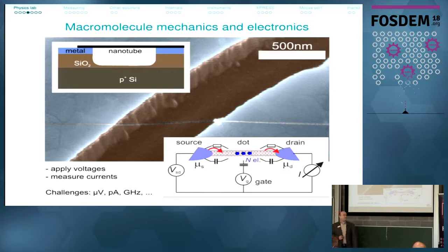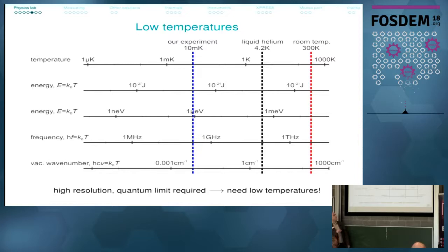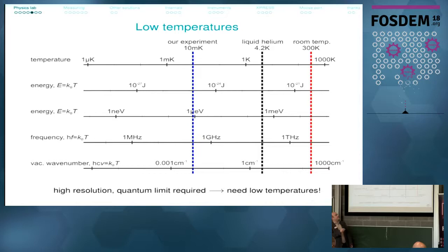The challenges are measuring very small voltages, very small currents, possibly at high frequencies, and seeing tiny details — which is why we go to low temperature. Temperature is for us something like noise: the higher the temperature, the more smeared out the effects we want to observe are. On this logarithmic temperature scale in Kelvin — going from 1,000 Kelvin, about three times room temperature, down to 1 Kelvin — our experiment is at 10 millikelvin, which is 0.01 degrees above absolute zero.